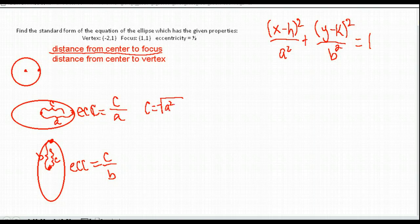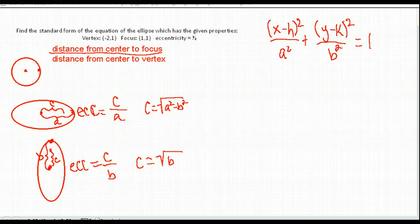For horizontal ellipses, C equals the square root of A squared minus B squared because A is larger. For a vertical ellipse, C is the square root of B squared minus A squared because B is larger.